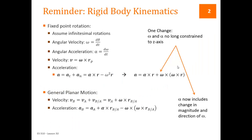Let's go back and look at rigid body kinematics, since in three dimensions very little actually changes. We start with a situation where we have a fixed point. If we have a fixed point and we can assume infinitesimal rotations, we can write our angular velocity as the time derivative of our angular position, and our angular acceleration as the time derivative of our angular velocity.